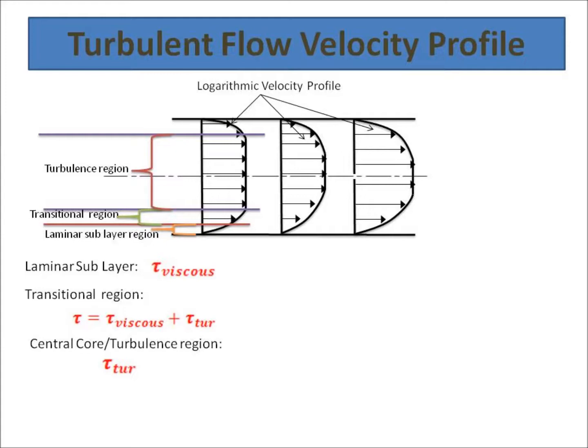The logarithmic velocity profile has three regions mainly. One is laminar sub-layer or viscous sub-layer region where the flow is laminar in nature. The thickness is very small. Viscous shear forces are dominant in this region, hence only shear stress exists—viscous, no turbulent shear exists in this region.